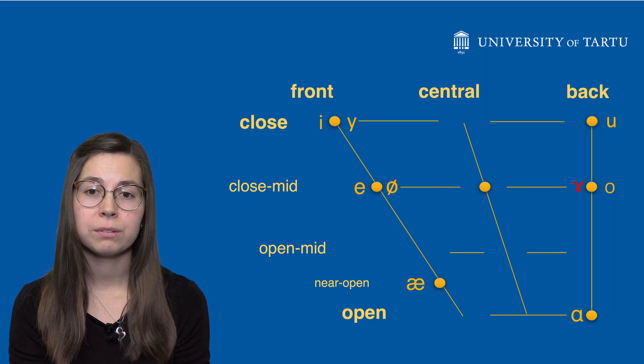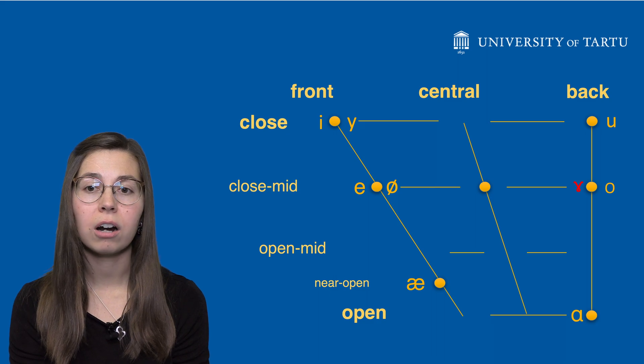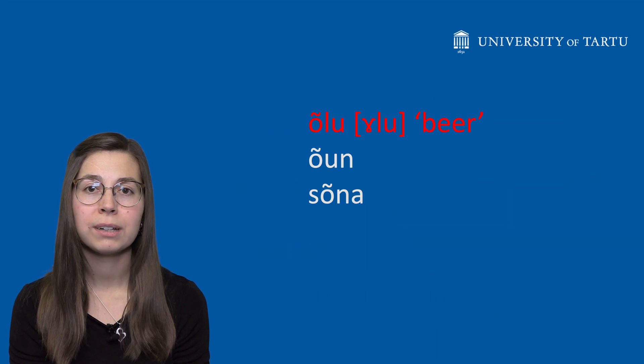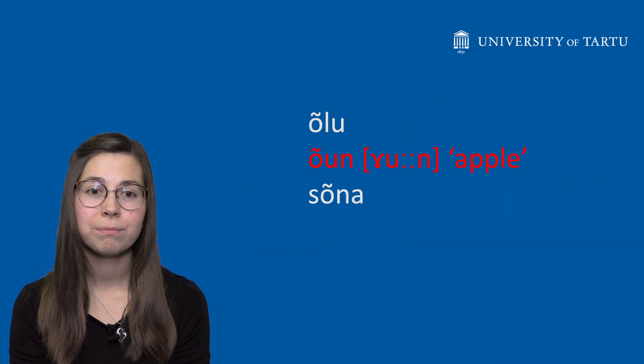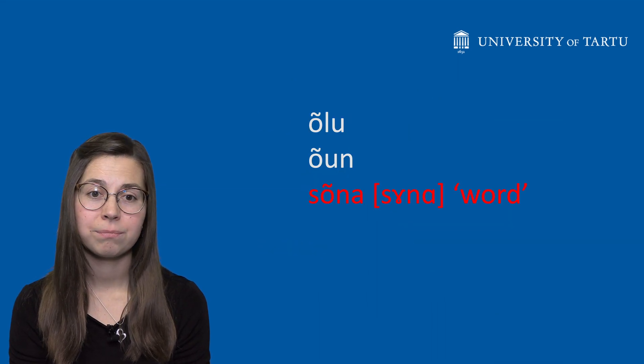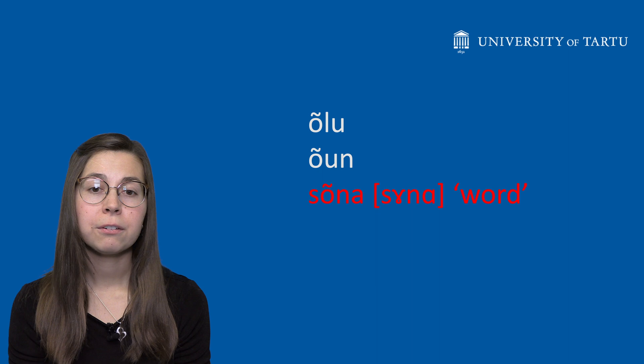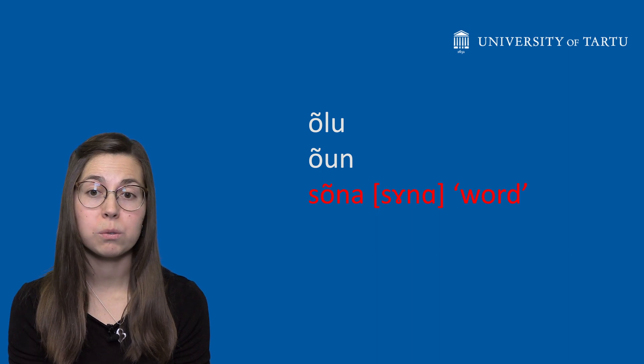Some examples of Estonian words with õ are: õlu, õun, sõna. Look at the figure to see how the tongue and lips move.